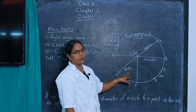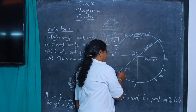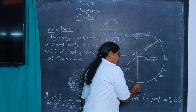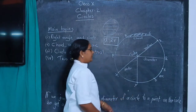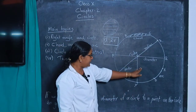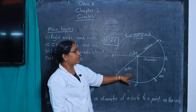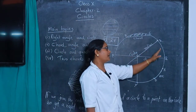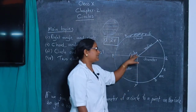What is a sector? Two radii OX and OY and one arc form a bounded region. The area enclosed by two radii and one arc is called a sector. These are the important parts of a circle.